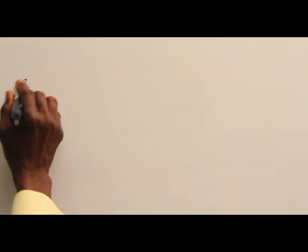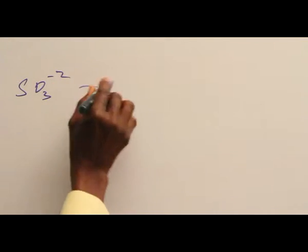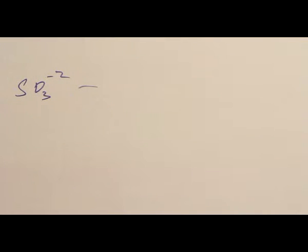Let's consider the thiosulfate ion. When thiosulfate reacts with a dilute acid like HCl or HNO3, sulfur dioxide is evolved, as seen in the equation.